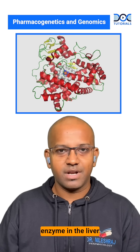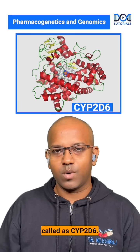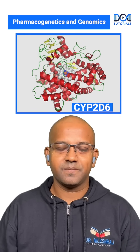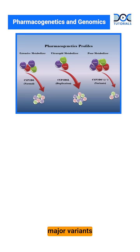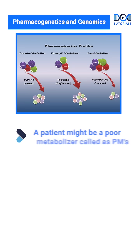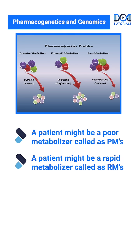We have an important enzyme in the liver called CYP2D6. There are two major variants of cytochrome P2D6. Either a patient might be a poor metabolizer — we call them PMs — or a patient might be a rapid metabolizer, called RMs.